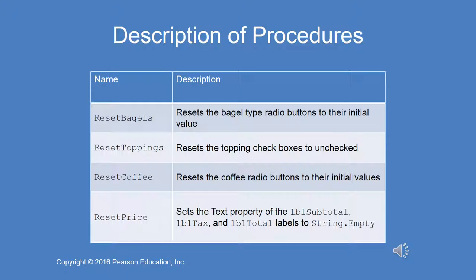Here is a description of all the procedures. Reset bagels resets the bagel radio buttons. Reset toppings resets the topping check boxes all to unchecked. Reset coffee resets the coffee radio buttons to their initial values. And reset price sets the text property of label subtotal, label tax, and label total to string dot empty.